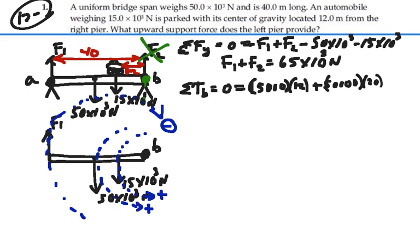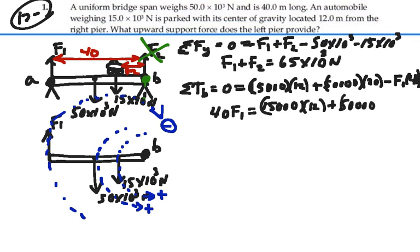And then we have the negative torque, which is F1 times its moment arm, 40 meters away. All these torques should add up to zero. So we have that 40 times F1 is equal to 15,000 times 12 plus 50,000 times 20.